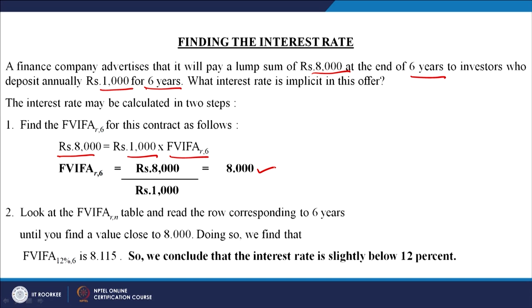This value of 8 is the future value interest factor for the annuity. Now you have to search for this value in the future value interest factor for annuity table — a table available at the end of every good financial management book, such as Prasanna Chandra's Financial Management (McGraw-Hill). The table contains present value interest factor, future value interest factor, and their annuity versions.